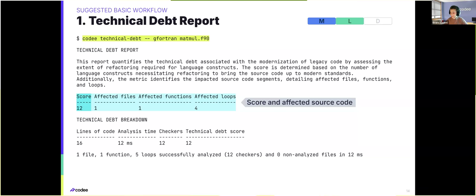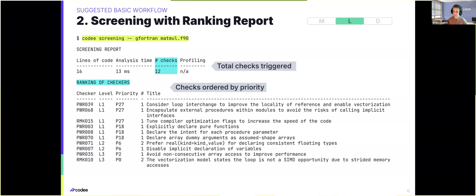The intention of this first report in our suggested workflow is to quantify the amount of improvement opportunities that CodeE identifies in the code. As a second step, we have the screening report. While the technical depth quantifies the amount of opportunities found, the screening report focuses on identifying which checks from the open catalog are applicable to the code. Here we can see detailed below all 12 checks that CodeE identifies in this MatMul code, and additionally CodeE orders them by priority based on estimated positive impact, to help prioritize refactoring efforts.